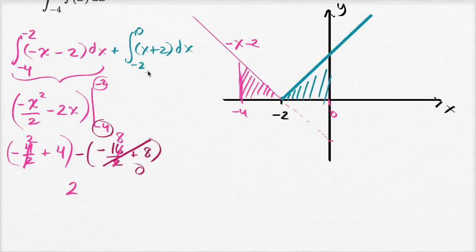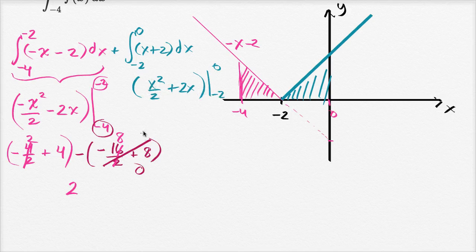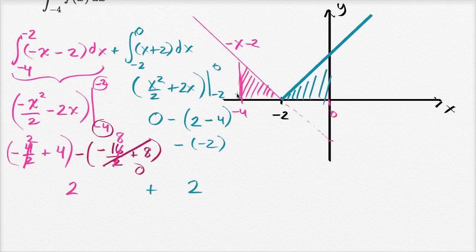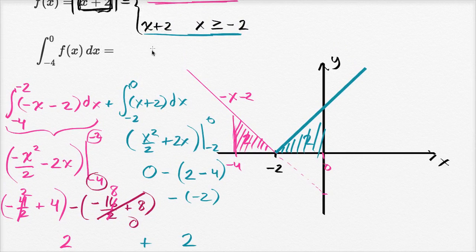For the second integral, the antiderivative of x plus two is x squared over two plus two x. Evaluating at zero gives zero. Subtracting the evaluation at negative two: negative two squared over two is positive two, plus two times negative two is minus four. So we subtract positive two minus four, which is negative two, giving us zero minus negative two, or positive two. So the second integral also equals two, and adding them together, our integral equals four.